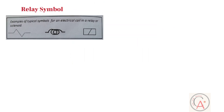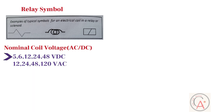As you can see, this is a typical symbol for an electrical coil in a relay or solenoid. Symbols for relays and coils are not as well standardized as for many electronic components. The coils of electromechanical relays have a nominal voltage. Common coil voltages are 5, 6, 12, 24, and 48 volt DC, and 12, 24, 48, and 120 volt AC.